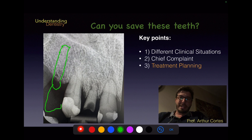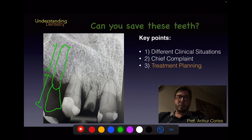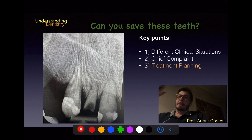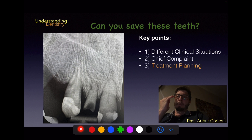For dental implant planning in this region: there appears to be sufficient height, but consider the abutment plus crown — the crown would be very long. A very long implant would also be needed. Of course, implant planning requires a CBCT, especially given the palatal bone concavity in this area.